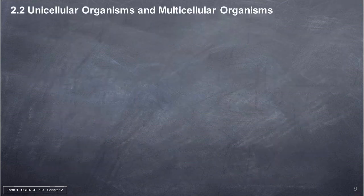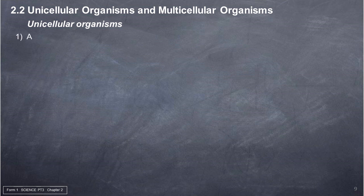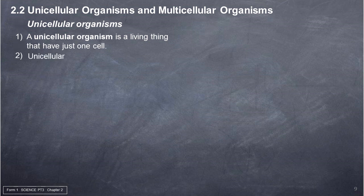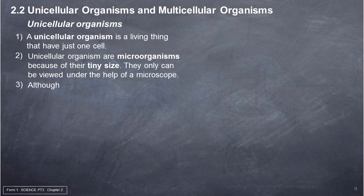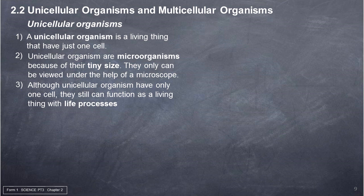2.2 Unicellular Organisms and Multicellular Organisms. Unicellular organisms: 1. A unicellular organism is a living thing that has just one cell. 2. Unicellular organisms are microorganisms because of their tiny size; they can only be viewed under a microscope. 3. Although unicellular organisms have only one cell, they can still function as a living thing, with life processes such as nutrition, respiration, excretion, digestion, movement, reproduction, and growth.